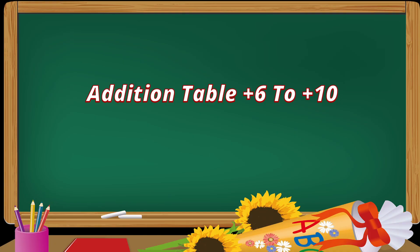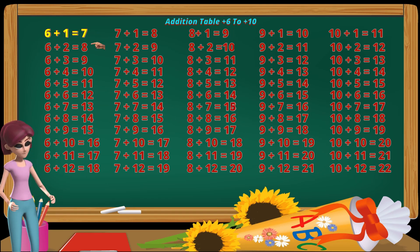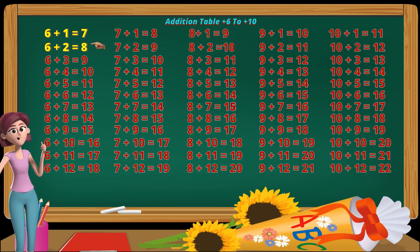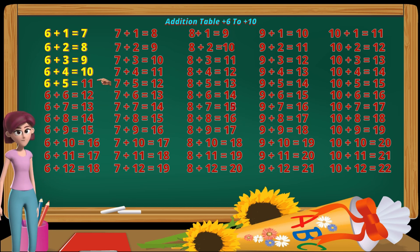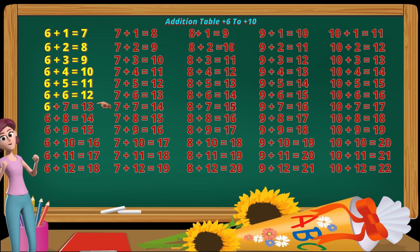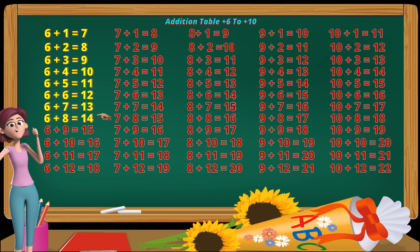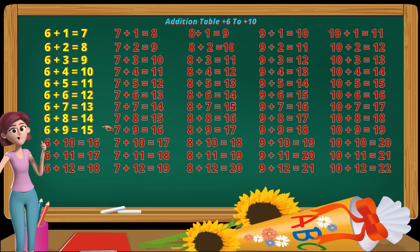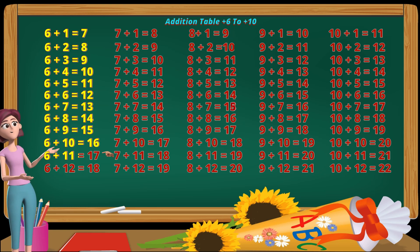Addition table, plus six to plus ten. Six plus one equals seven. Six plus two equals eight. Six plus four equals ten. Six plus five equals eleven. Six plus six equals twelve. Six plus seven equals thirteen. Six plus eight equals fourteen. Six plus nine equals fifteen. Six plus ten equals sixteen. Six plus eleven equals seventeen. Six plus twelve equals eighteen.